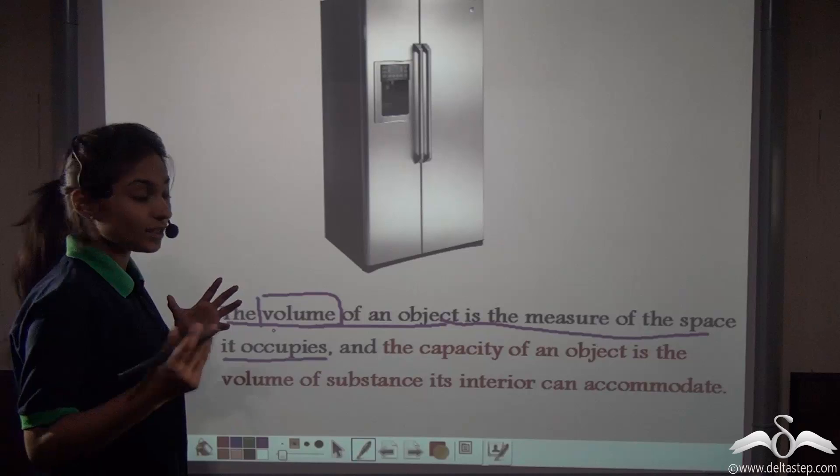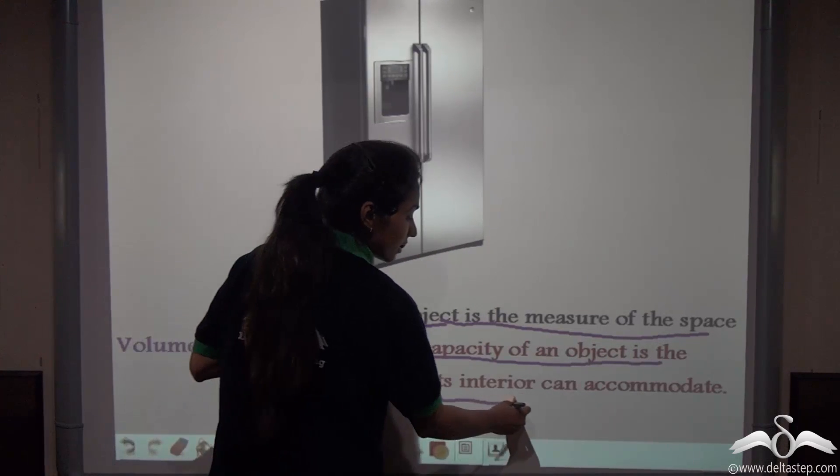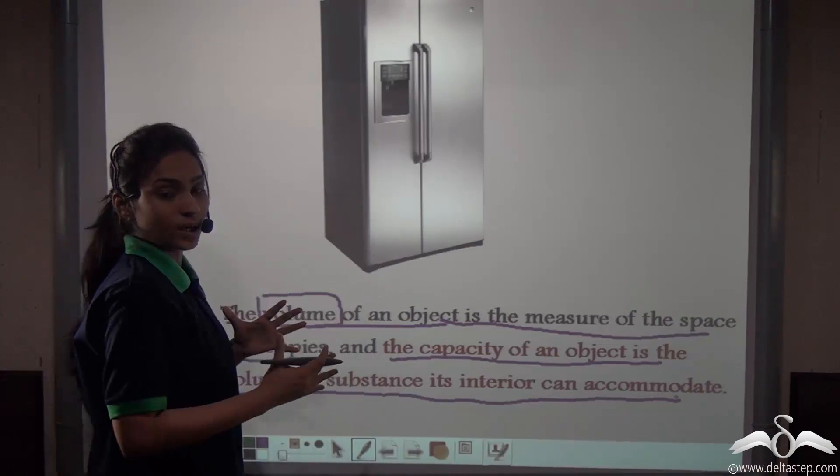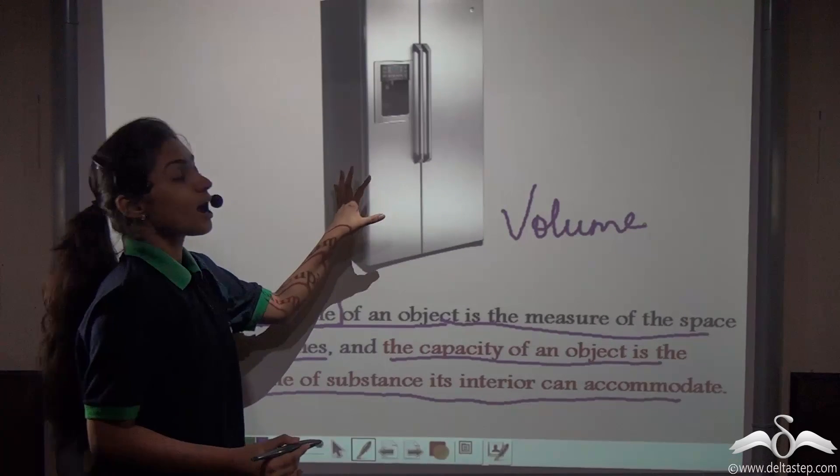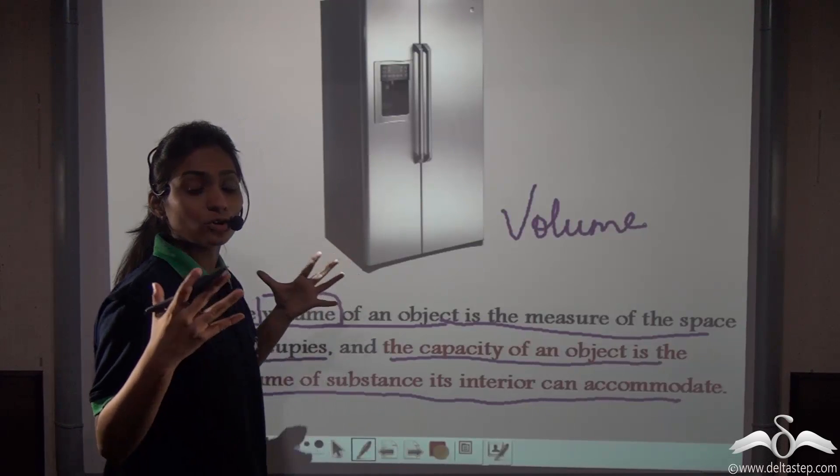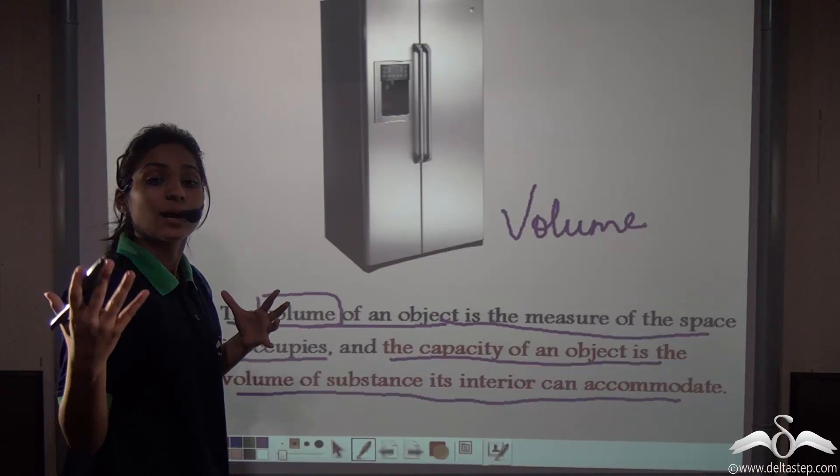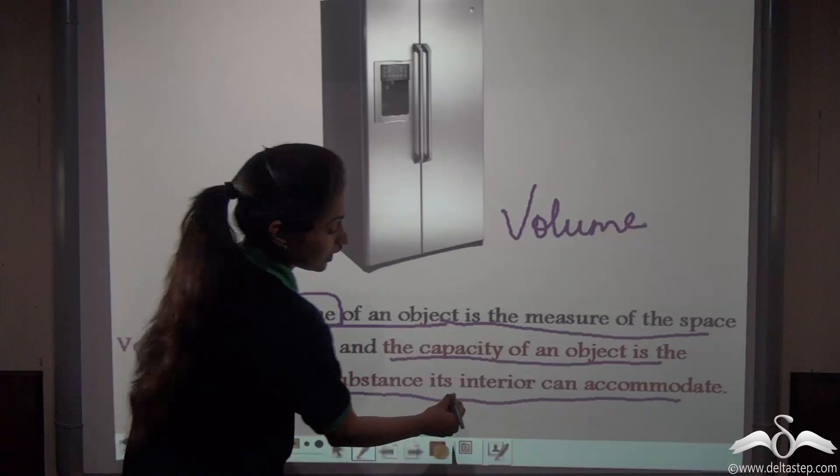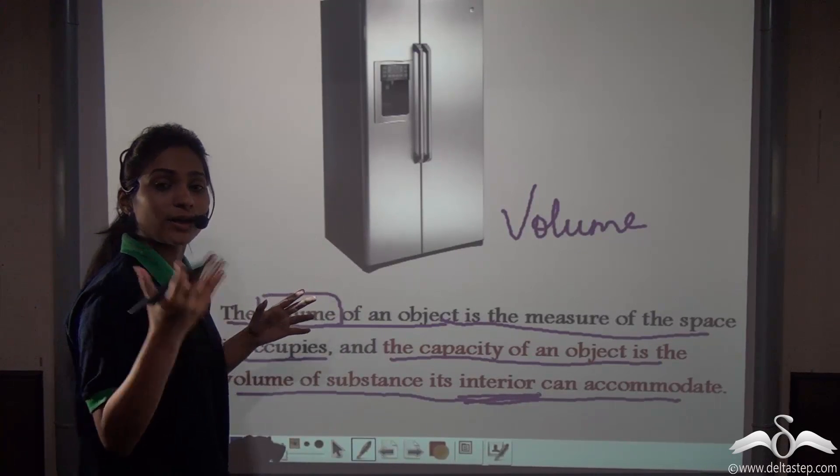The capacity of the object is the volume of the substance its interior can accommodate. So the space it will occupy externally will be called as volume, and the space available inside the refrigerator—the amount of space that we can use inside the refrigerator—is called as capacity. The capacity is the volume of the substance its interior can accommodate.